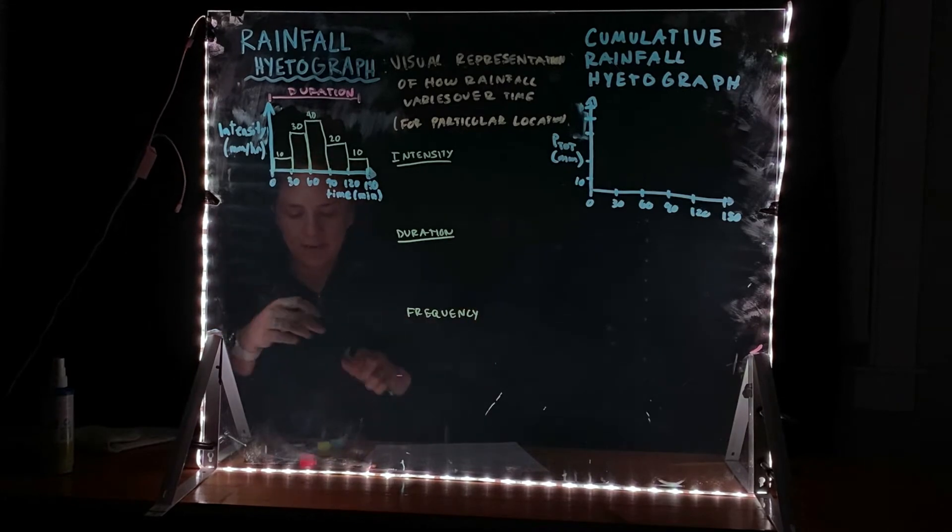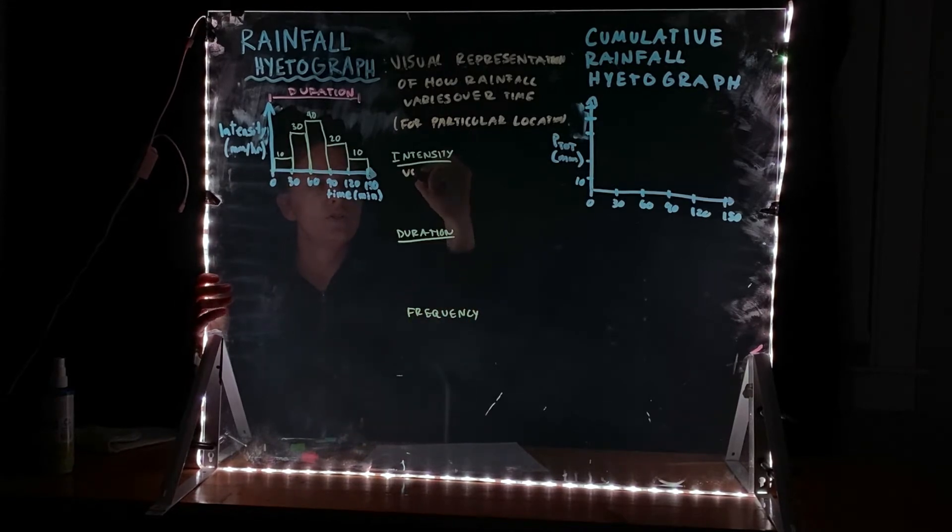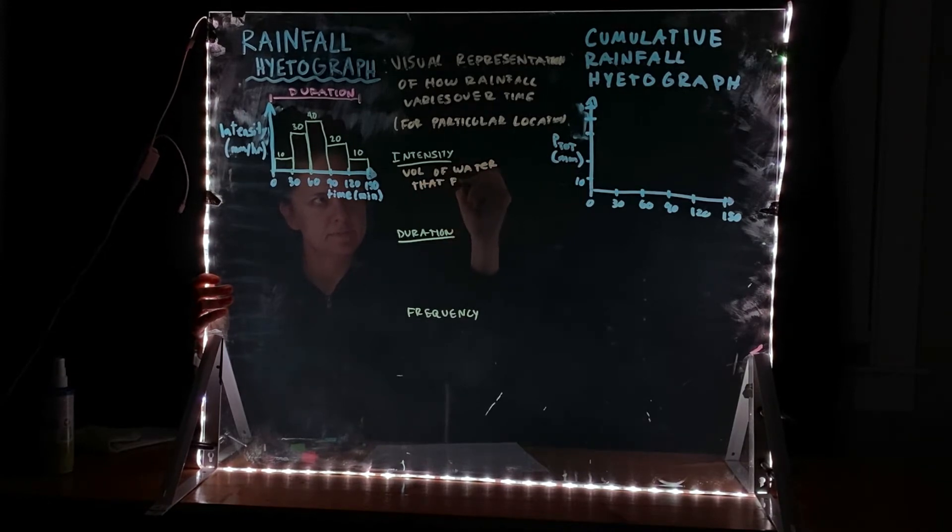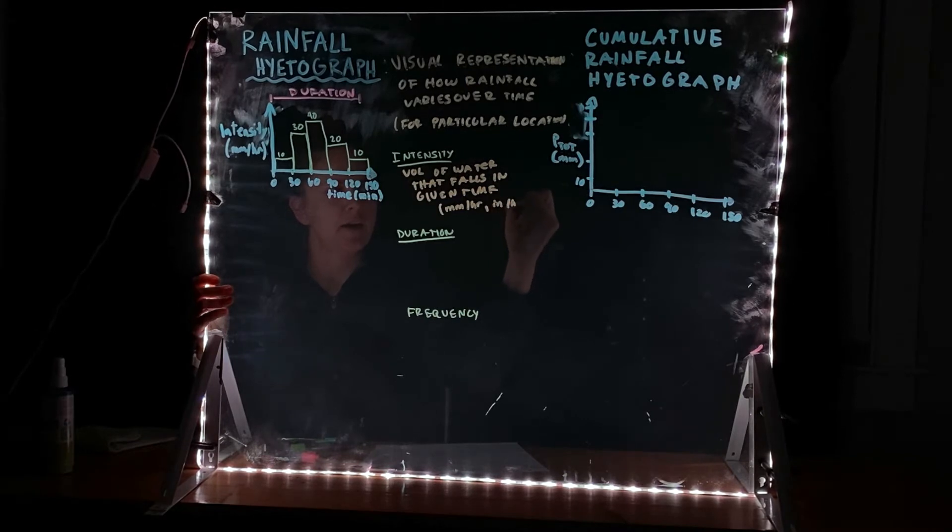So we'll define these three terms here with respect to a hyetograph. So the intensity is the volume of water that falls in a given time, which is why you see the units of millimeters per hour, or you'll see it in inches per hour.